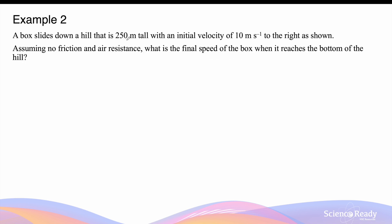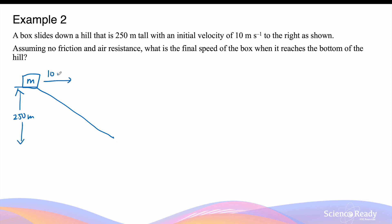A ball slides down a hill that is 250 meters tall, with an initial velocity of 10 meters per second down to the right as shown. We have a box with mass m, initially 250 meters above the ground, moving at 10 meters per second horizontally to the right before it starts sliding down. Assuming there's no friction and air resistance, what is the final speed of the box when it reaches the bottom of the hill?